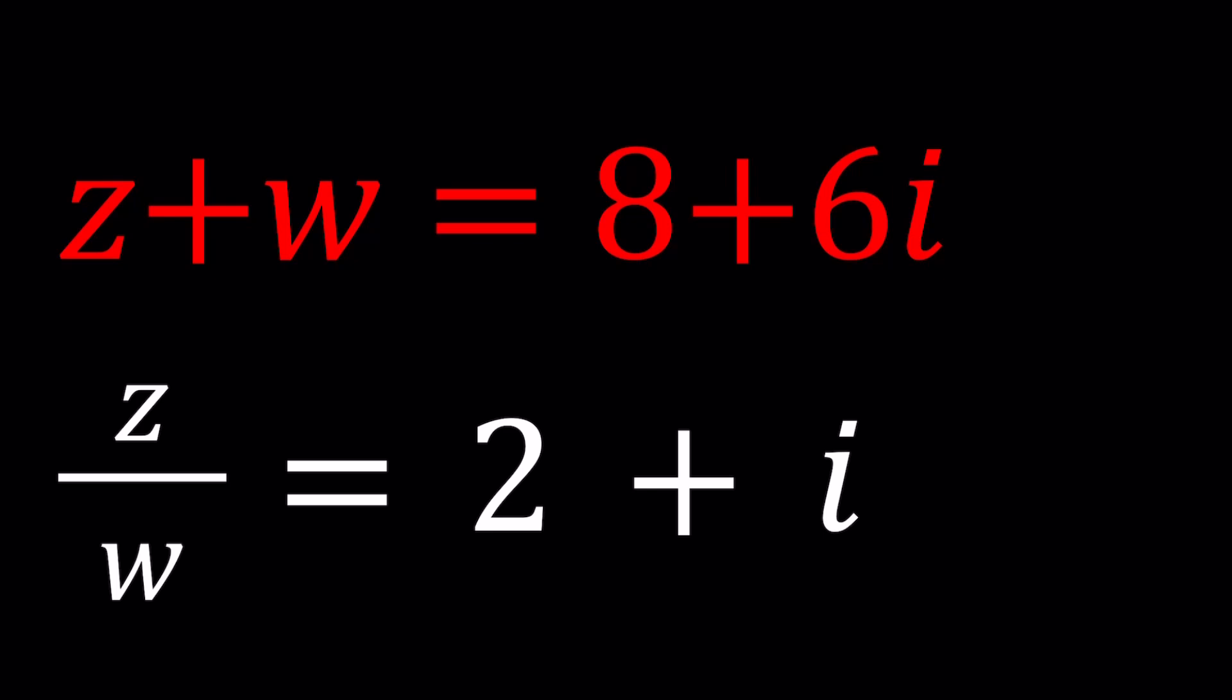You're probably familiar with solving systems, linear systems, quadratic systems, and so forth with real numbers but this is very similar. Okay, so we have z plus w equals 8 plus 6i and z over w equals 2 plus i. So when you divide a complex number by another complex number, you also get a complex number. It's kind of like the division can be expressed as multiplication. It's the inverse operation. Anyways, we'll get to that.